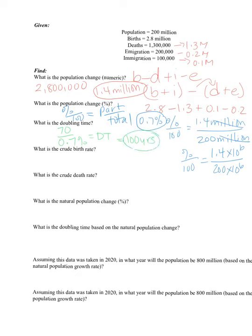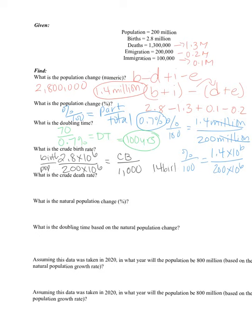Next, crude birth rate. Crude means out of a thousand. The birth rate is 2.8 million — or 2.8 times 10 to the 6 — out of the total population of 200 times 10 to the 6, equals the crude birth rate out of 1,000 (10 to the 3rd). When I cross multiply and solve, I get a crude birth rate of 14 births per thousand.